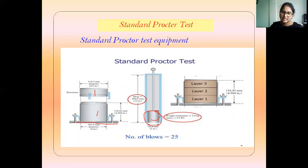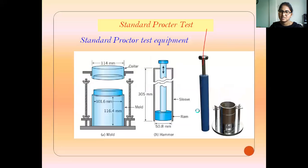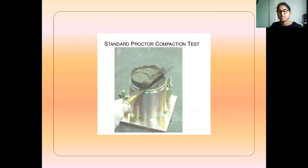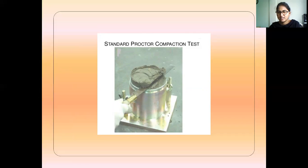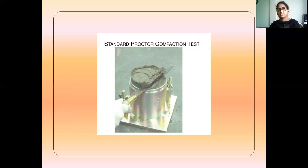After adding the first layer and compacting it, add the 2nd layer and compact it, then add the 3rd layer and compact it — that is layer-by-layer compaction. After completing the 3 layers, the collar at the top of the mold is used for leveling the soil. For each layer, 25 blows are applied. After compaction is completed, remove the collar, level the surface, and weigh. Take 3 kg of soil, passed through a 4.75 mm sieve.